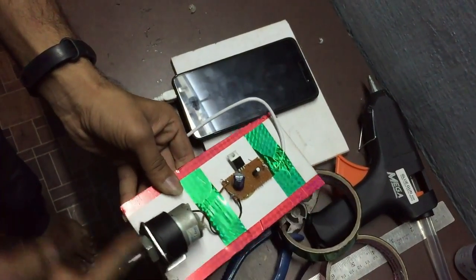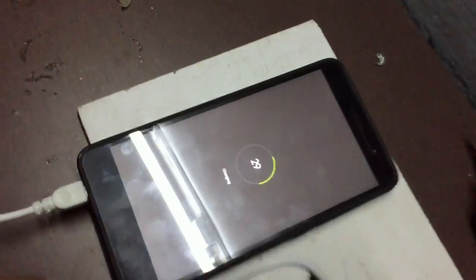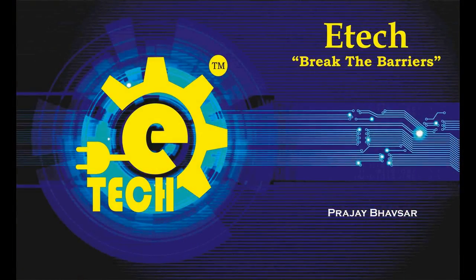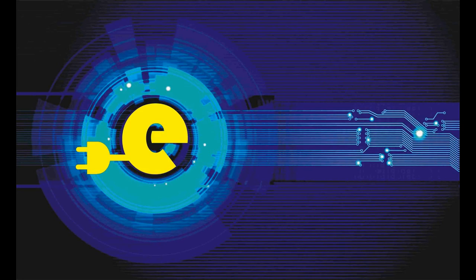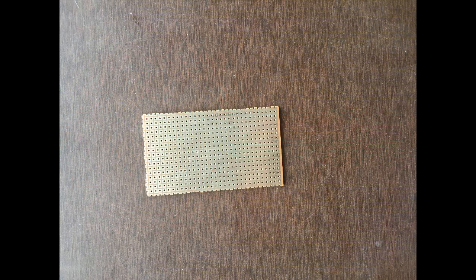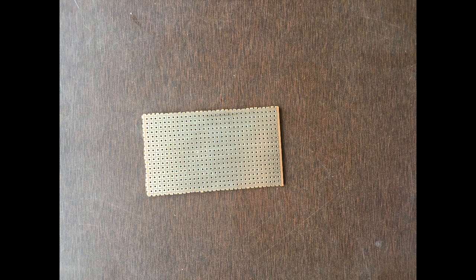Hello friends, welcome back to iTech. Let's see how to make a USB hand-operated charger for your mobile. Subscribe to my channel. Okay, let's start. So for making a hand-operated charger, you need a small PCB, that is printed circuit board.